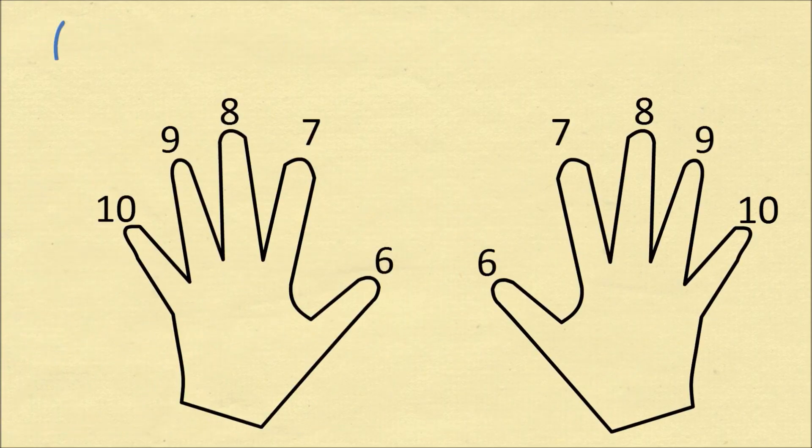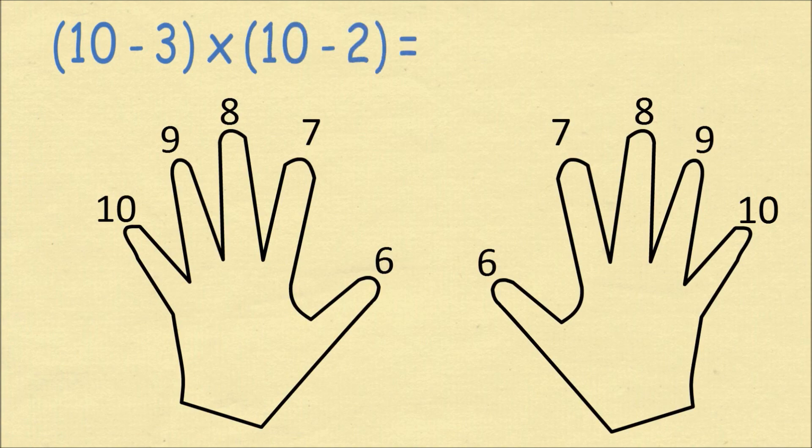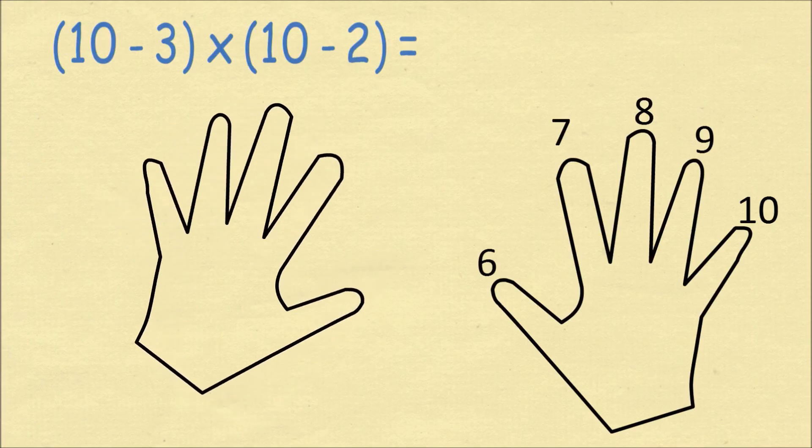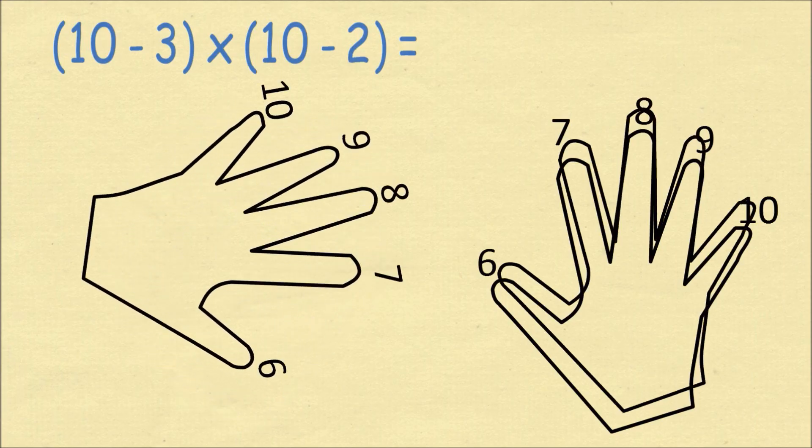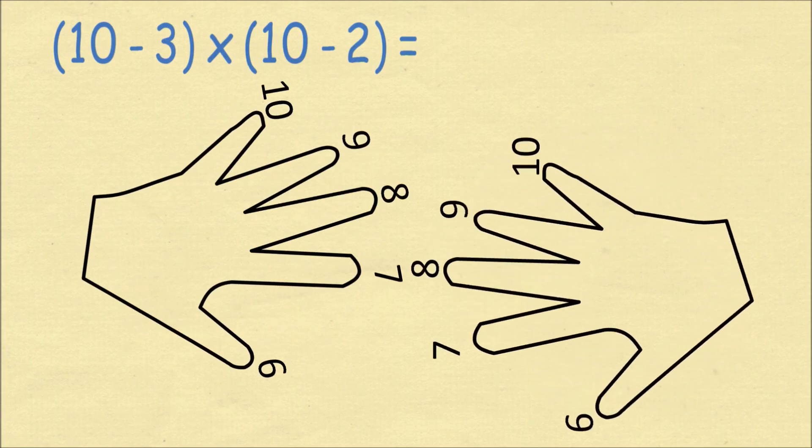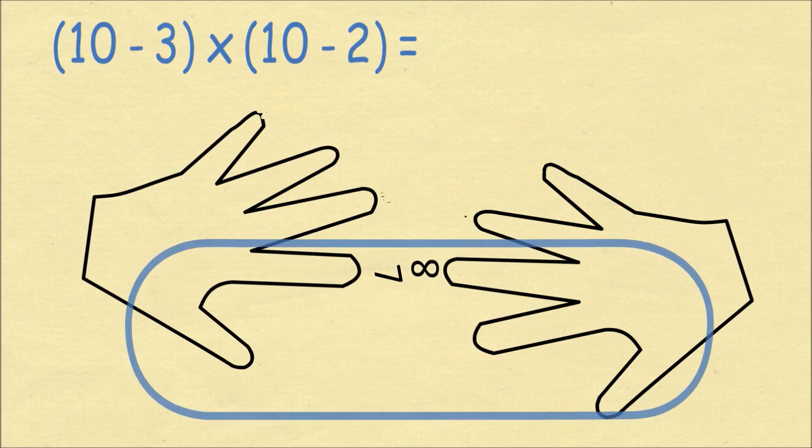I'll try and explain the problem in another way. Let's try and do 10 minus 3 times 10 minus 2. This is the same problem of 7 times 8, but we'll think about it as 10 minus 3 times 10 minus 2. On the left hand, we rotate 3 fingers from the pinky, and on the right hand we line up 2 fingers from the pinky.